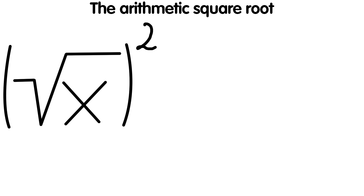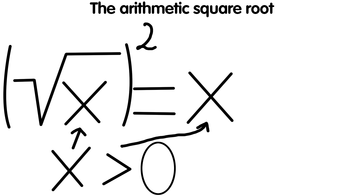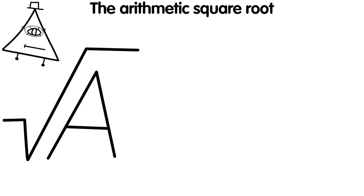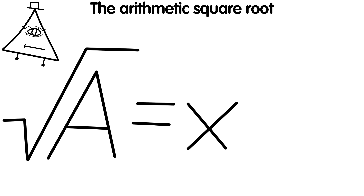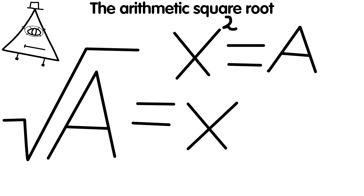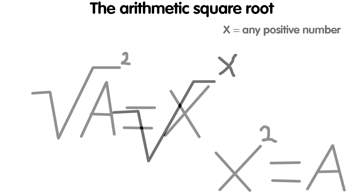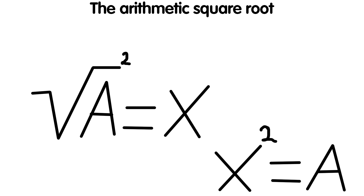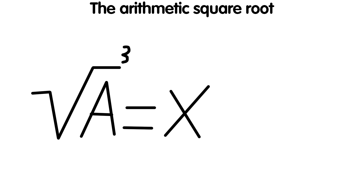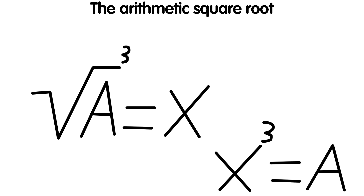The arithmetic square root of a non-negative number a is a non-negative number whose square is equal to a. The number under the root sign must be non-negative, and based on the definition, the value of the root must also be non-negative: the root of a equals x where x squared equals a. Roots depend on the exponent: a square root has exponent 2, while a cube root has exponent 3, and the number is raised to the third degree.